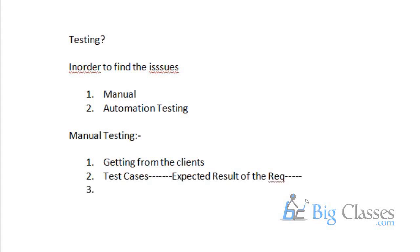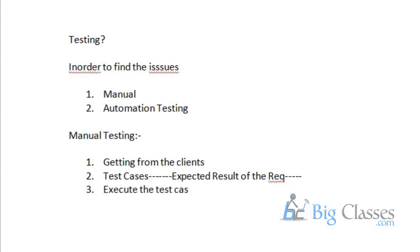After preparing the test cases, at the same time, in parallel, the development team is developing the code for the requirements. While we prepare the test cases, the development team is developing the code. Once the developers have prepared the build, they will release the build to the QA team. Once we get the build from the development team, we need to execute the test cases on the build.